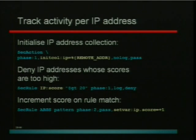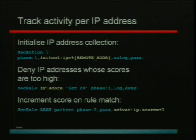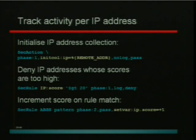In the second example, we're checking the value of the variable 'score' — if it's greater than 20 then we start to block. So this is something you can use for anomaly-type protection, where you increase a counter when you see attacks and only once a counter reaches a threshold you can block. And in the third example you can see how, when a rule fires, you can increase the value of IP.score by one.